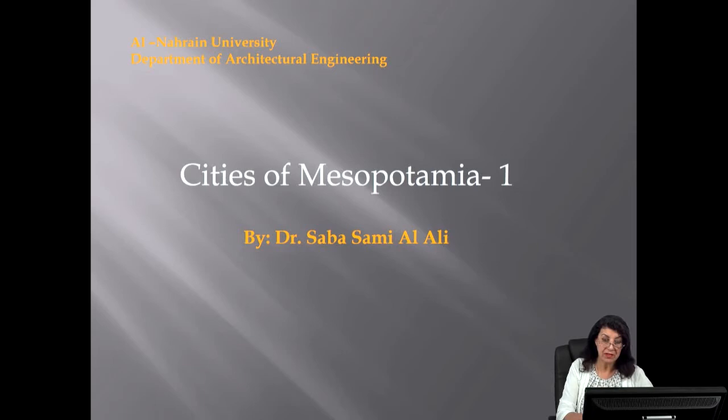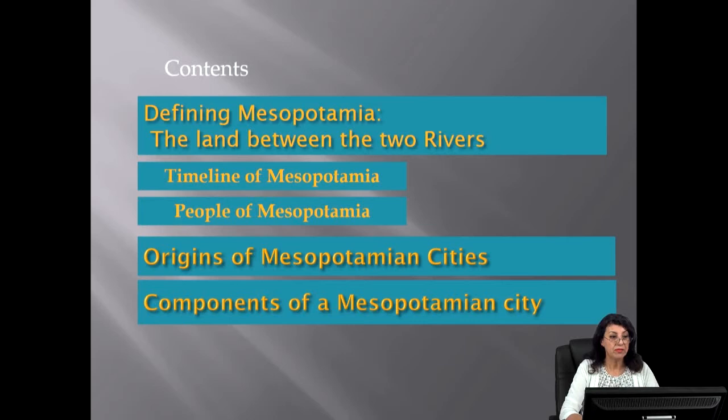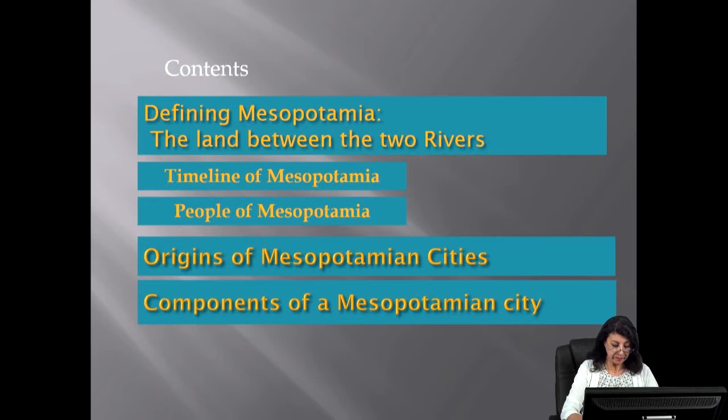Good morning. This lecture is from the course of History of Architecture and Urbanism in Mesopotamia, dedicated to undergraduate students of the second year in the Department of Architecture at Nehren University. The contents of this lecture will be defining the Mesopotamia area, the land between the two rivers, the timeline of Mesopotamia, and the people who lived in Mesopotamia. The second topic will cover the origins of Mesopotamian cities, and finally the components of the Mesopotamian city.